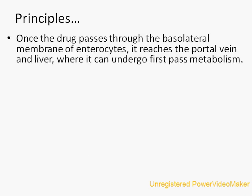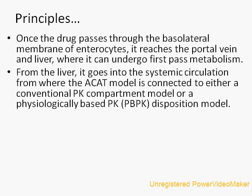Once the drug passes through the basolateral membrane of the enterocyte, it reaches the portal vein and liver where it can undergo first-pass metabolism. From the liver it goes into the systemic circulation, from where the ACAT model is connected to either a conventional PK compartment model or a physiologically based PK (PBPK) model.